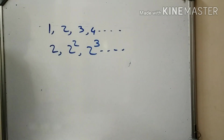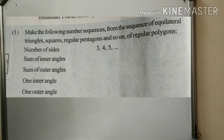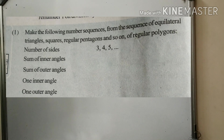Now let's go to the 10th question. The question is: make the following number sequences from the sequence of equilateral triangles, squares, regular pentagons and so on. These are all regular polygons.